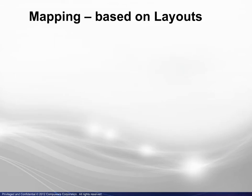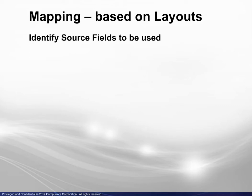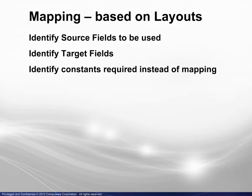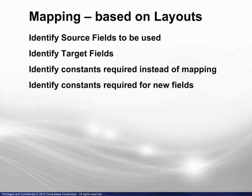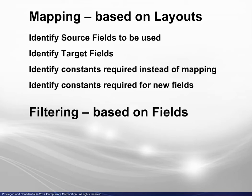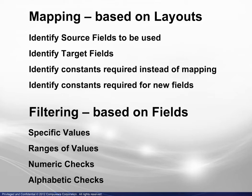We will go through a reformat example and look closely at two areas of user setup. First, there is mapping, which is based on record layouts. Identification is required for the source fields to be used, the target fields, any constants used instead of mapping, and constants required for new fields. Second, there is filtering, which is based on fields. Filtering may be based on specific values, ranges of values, numeric checks, and alphabetic checks.